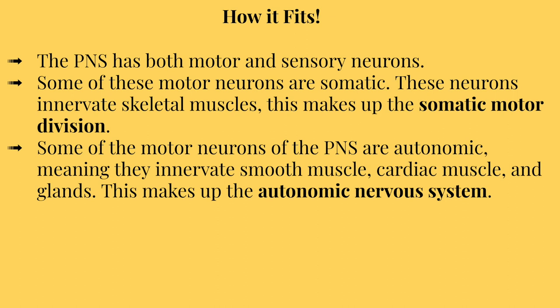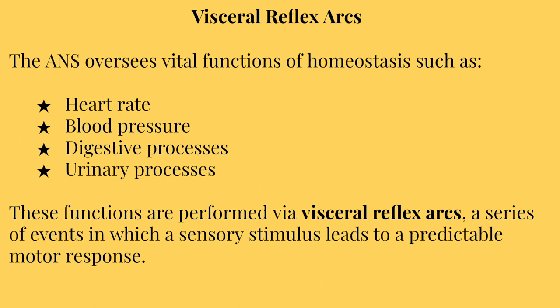The PNS has both a motor and sensory division with motor and sensory neurons. Some of these motor neurons are somatic — these somatic neurons innervate, meaning they supply nerves to, skeletal muscles, making up the somatic motor division. Some motor neurons of the PNS are autonomic, meaning they innervate smooth muscle, cardiac muscle, and glands, making up the autonomic nervous system. The ANS plays a huge role in homeostasis and making sure that physiological processes in the body are functioning properly and are stable.